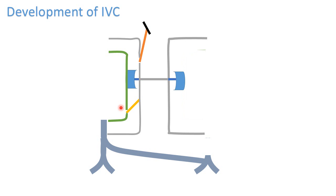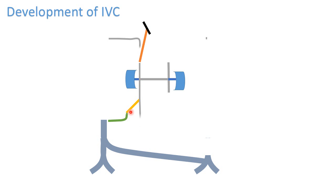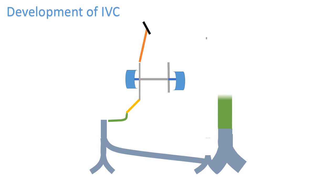except a part of the sub-cardinal vein extending between the posterior cardinal vein and the sub-cardinal supracardinal anastomosis. With further development, the rest of the veins will disappear and the final inferior vena cava will be formed as shown in the diagram.